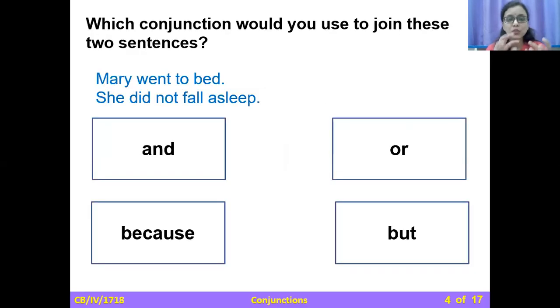Now, let's do one small exercise. Which conjunction would you use to join these two sentences here? Mary went to bed. So if she has gone to bed, she should sleep, right? Mary went to bed. She did not fall asleep. Which word will you use here to make them as one sentence? Very good. Exactly. Mary went to bed, but she did not fall asleep. But is used because there is an opposite idea which came. So this is how its function is. But is used for opposite idea.